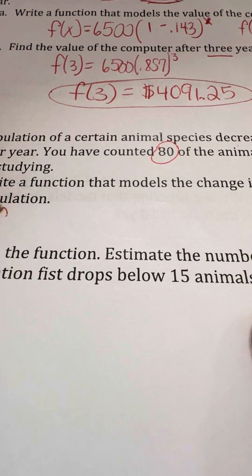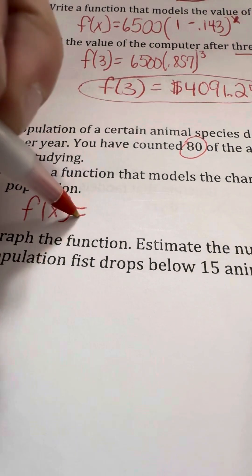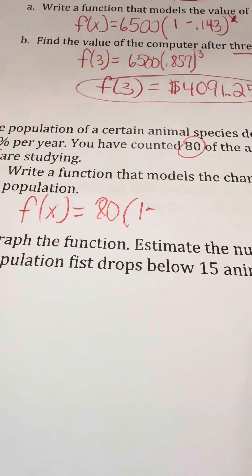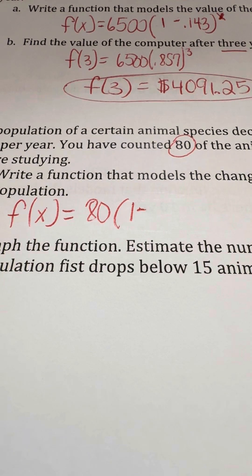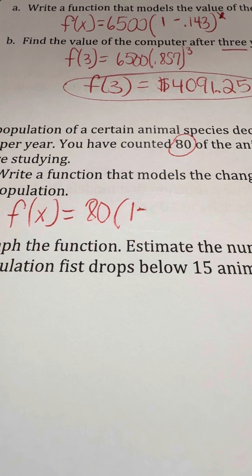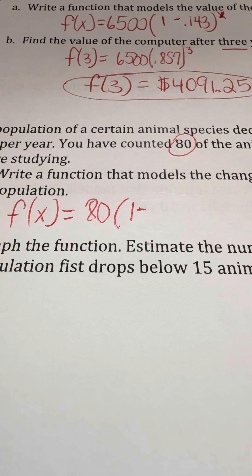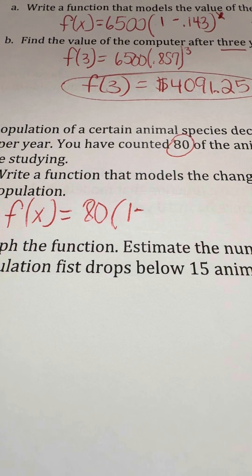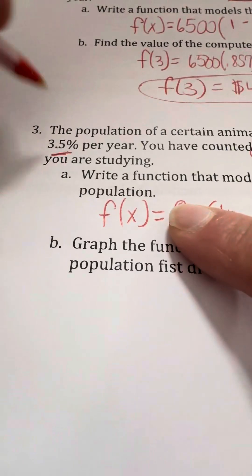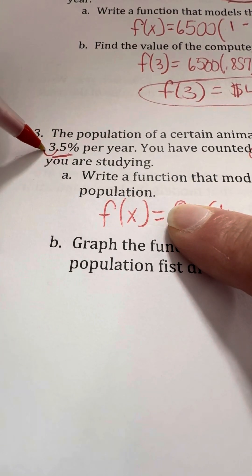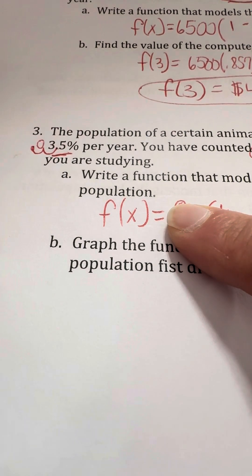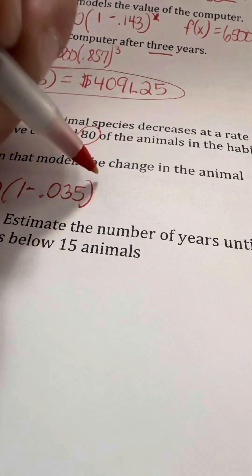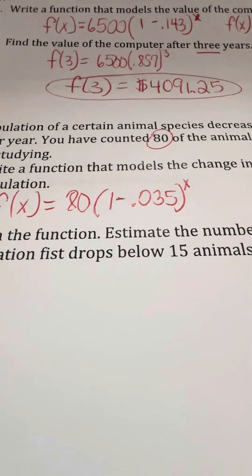So when we're writing this function, we're going to start off with f of x is equal to the 80 that we're starting with. And then we always, in parentheses, are going to put 1, either plus or minus whatever the percentage is that we're dealing with. In the case of decaying, we're taking 100%, which is the 1, and we're going to subtract because we're getting less of that. And we're going to change this from 3.5%. And we're going to move the decimal one, two places over to the left and make it a decimal. So we're going to subtract 0.035 from it. And then it's going to be to the x exponent. So that's what it looks like.